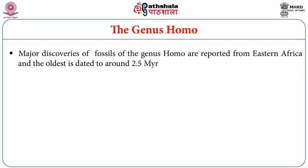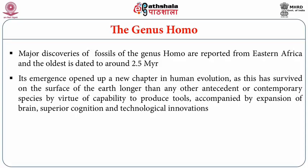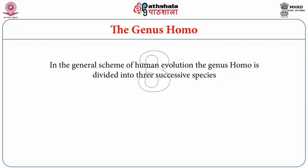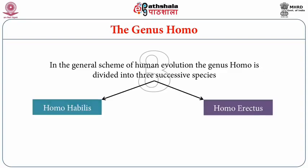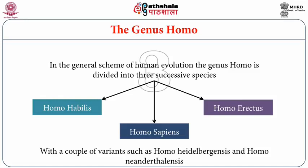Major discoveries of fossils of the genus Homo are reported from eastern Africa, with the oldest dated to around 2.5 million years ago. Its emergence opened a new chapter in human evolution, as it survived longer than any other antecedent or contemporary species by virtue of tool production, brain expansion, superior cognition and technological innovations. In the general scheme of human evolution, the genus Homo is divided into three successive species: Homo habilis, Homo erectus, and Homo sapiens, with variants such as Homo heidelbergensis and Homo neanderthalensis.